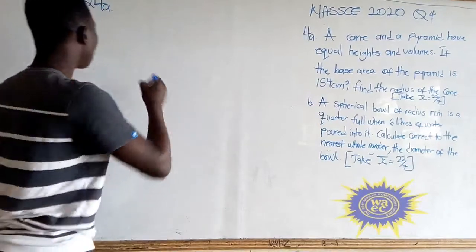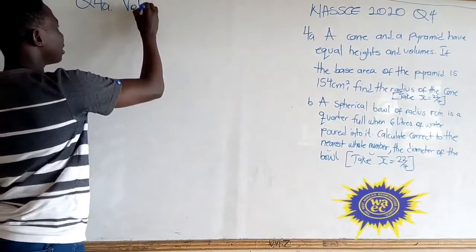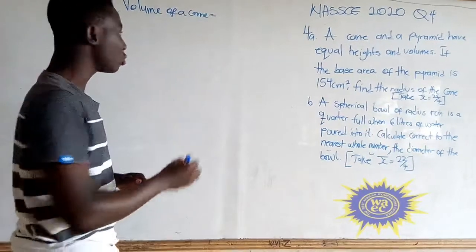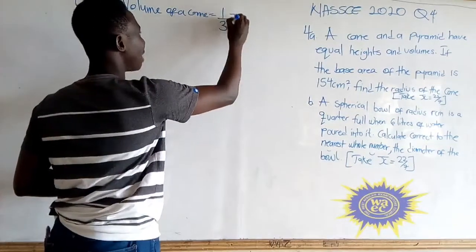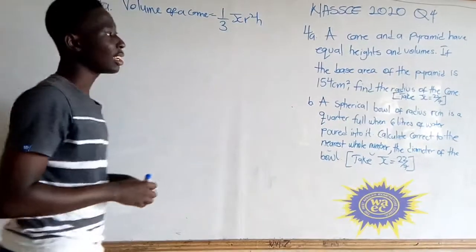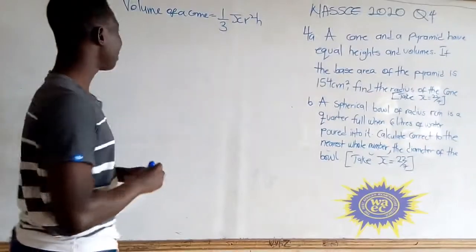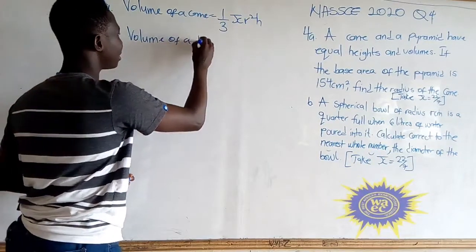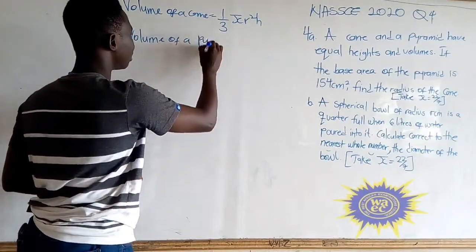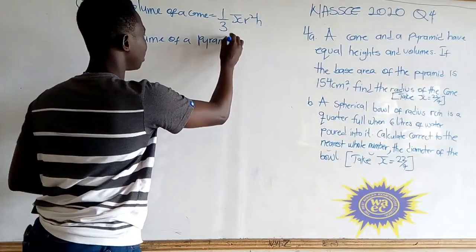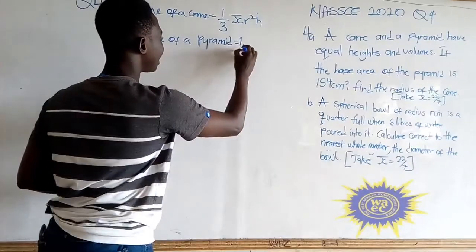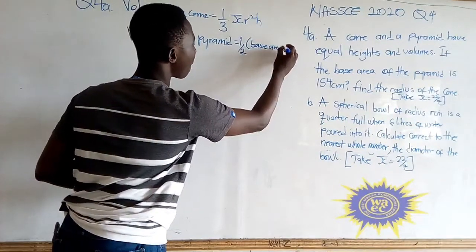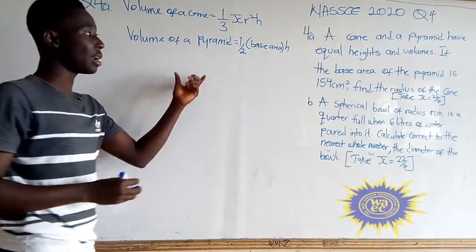Now the volume of the cone is equal to one-third pi r squared times height. And the volume of a pyramid is equal to one-third times the base area times height.